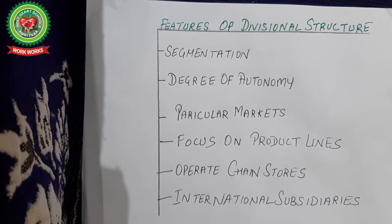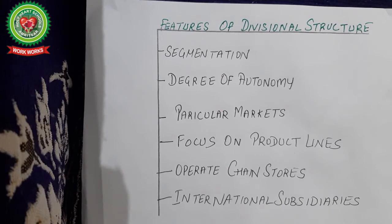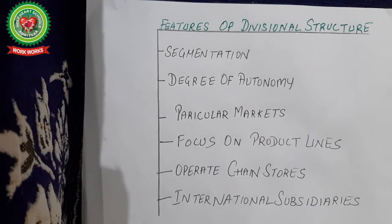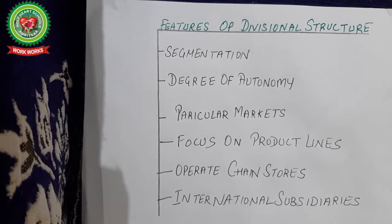Let us discuss the features of divisional structure. First is segmentation — all the activities of the organization are grouped and divided into smaller parts known as segments, and this process is called segmentation. There is a degree of autonomy — every division is an independent unit to work on its own. In divisional organization structure there are particular markets, like cosmetic market, footwear market, and garments market.